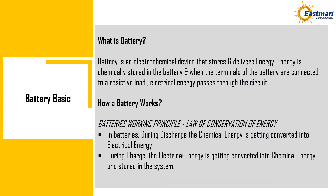What is a battery? A battery is an electrochemical device that stores and delivers energy. Energy is chemically stored in the battery, and when the terminals of the battery are connected to a resistive load, electrical energy passes through the circuit. A battery works on the principle of the law of conservation of energy. During discharge, chemical energy is converted into electrical energy. During charge, electrical energy is converted into chemical energy and stored in the system.